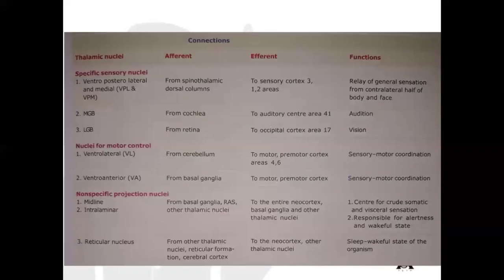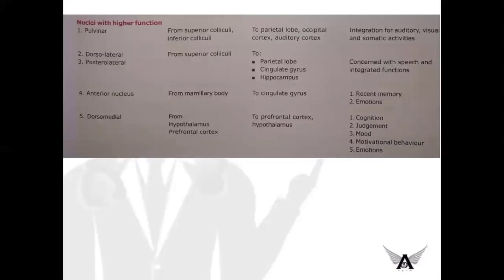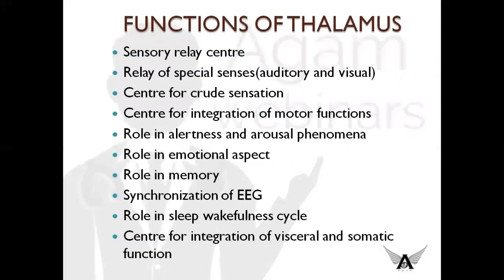This table gives you a summary of the afferent, efferent, and functions of each nucleus. Also this slide gives the afferent connection, efferent connection, and functions of each nucleus. If you remember each nucleus, you can easily derive the functions of the thalamus.